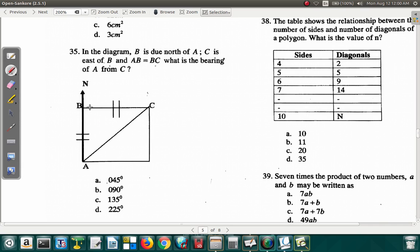In the diagram, B, that's B here, is north of A, which is this. Going straight up, that's north. You see the north symbol and the north line here. C is east of B. So C is east of B. A B is equal to B C. You can see it from the two strokes at each end at each line. What is the bearing of A from C? The bearing of A from C.